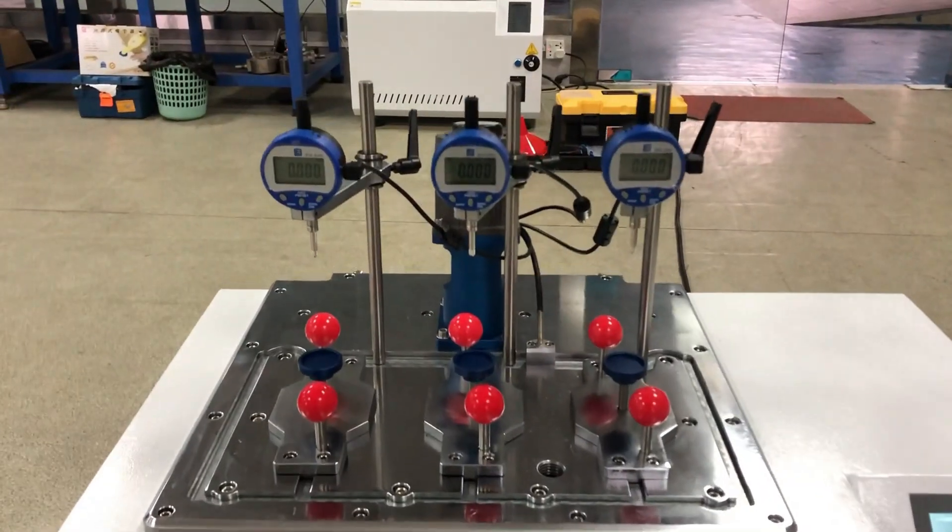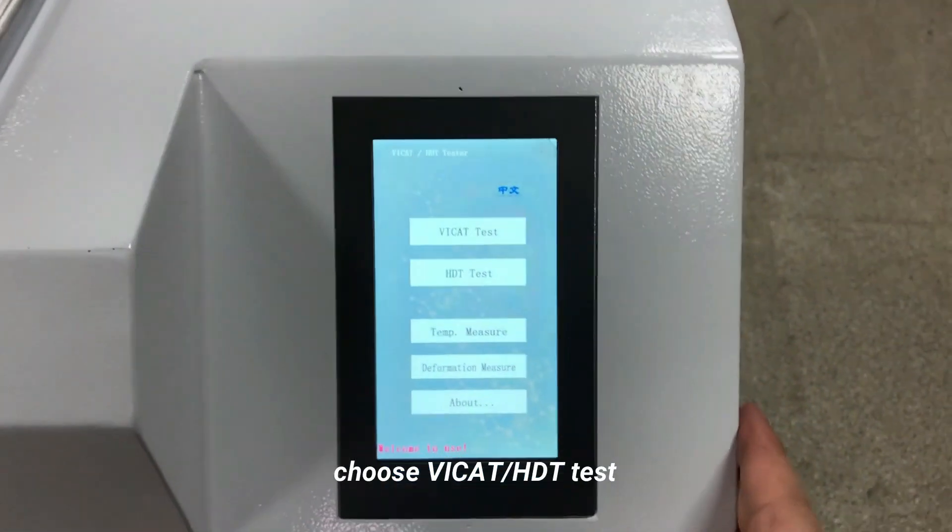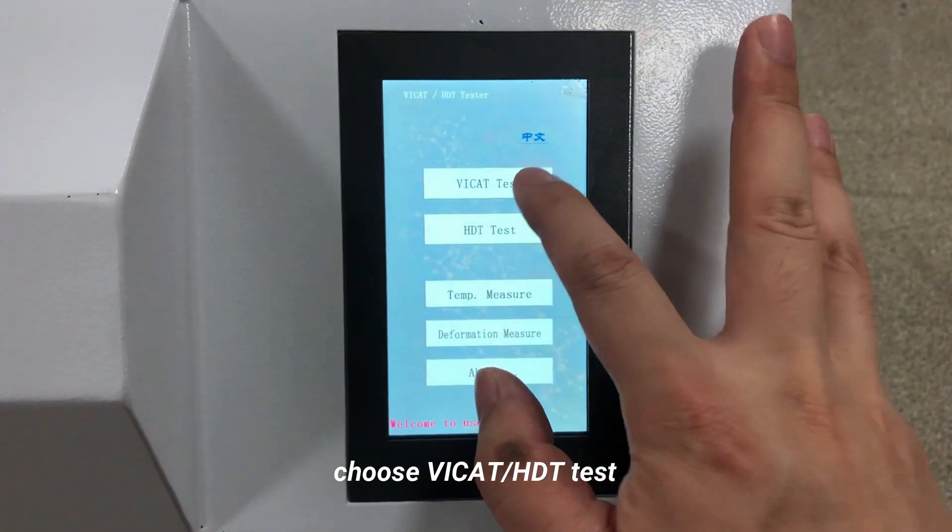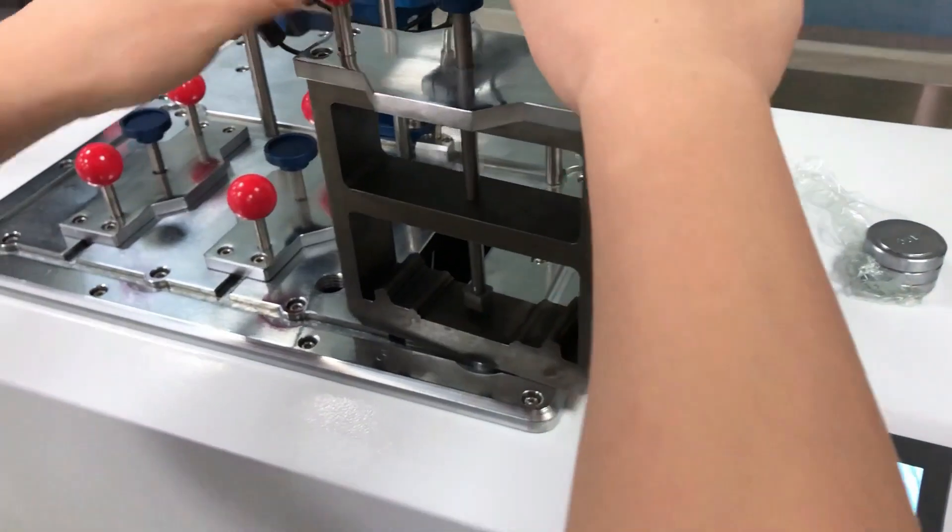The RT-705 Thermal Deformation Vicket Softening Point Tester conforms to ISO 75, ISO 2507, and ISO 306.